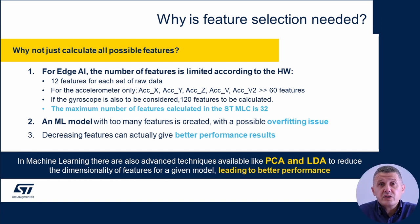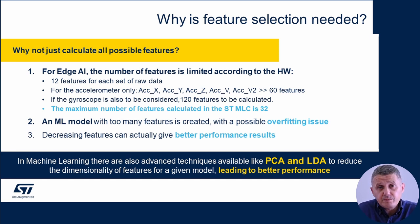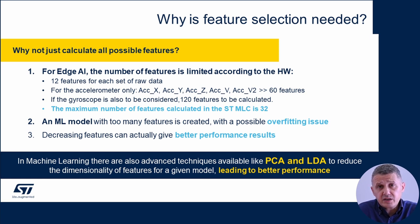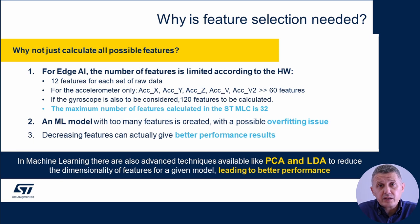Let's focus our attention on the selection of features for a machine learning model, in particular the decision tree. Why is it so important? Why don't we just take all possible available features? There are three main reasons: the first is hardware limitations of edge AI devices — for example, there may be a maximum number of features for the MEMS MLC. The second is possible overfitting. The third is that by decreasing the number of features, we may achieve better performance.